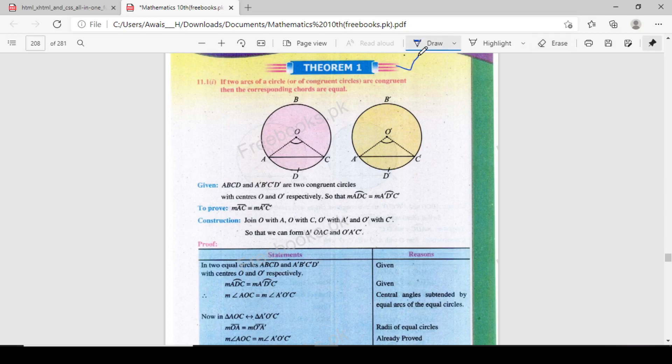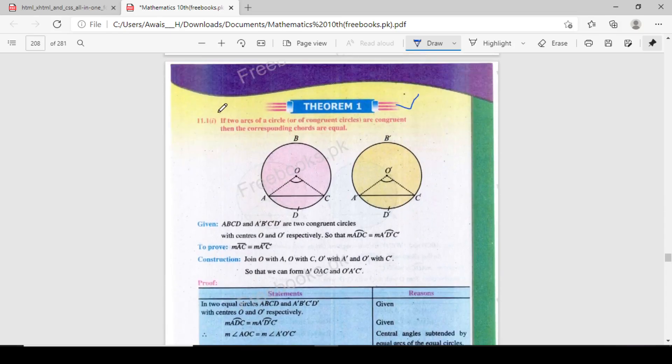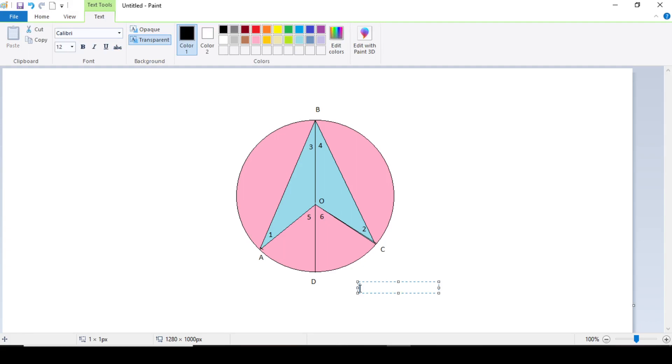So here's unit number 11, theorem number one. I will read this. Theorem 11.1 states: if two arcs of a circle are congruent, then their corresponding chords are equal. So here these are shapes. Today in this lecture I will create these shapes.